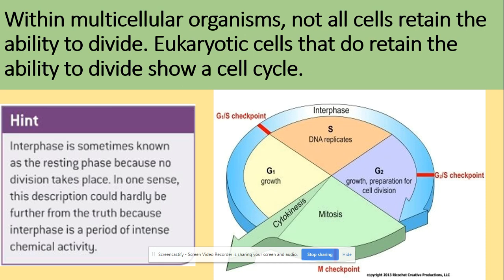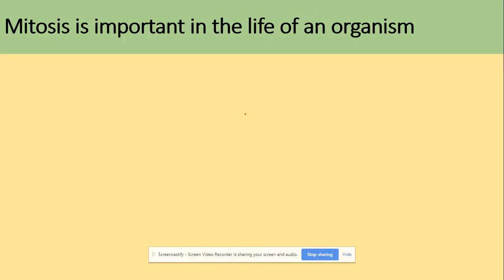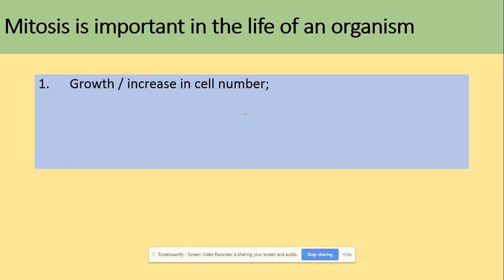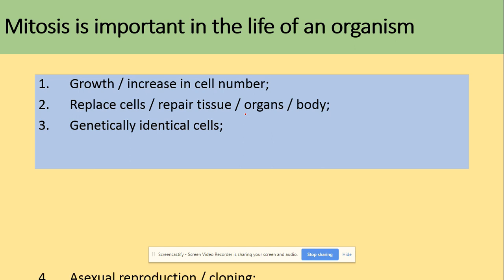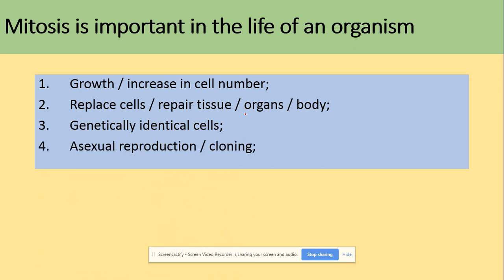In multicellular organisms, not all cells retain the ability to divide. Eukaryotic cells that do retain that ability show a cell cycle. Mitosis is important because it allows growth — meaning an increase in cell number, not a single cell getting bigger — leading to replacement of cells, repair of tissues, and asexual reproduction. Genetically identical daughter cells are produced.